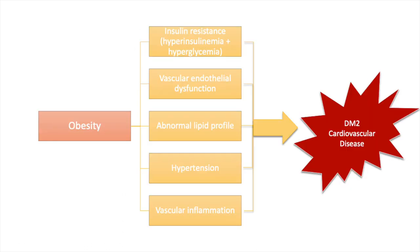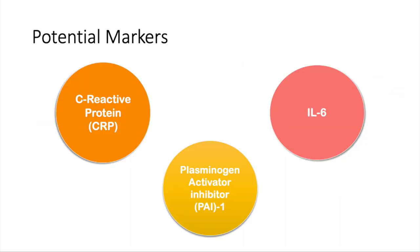To summarize, a simplified way of seeing this is that obesity will cause insulin resistance, vascular endothelial dysfunction, abnormal lipid profile, hypertension, and vascular inflammation — all of which lead to cardiovascular disease and type 2 diabetes. There are also inflammatory and prothrombotic markers associated with increased risk for subsequent cardiovascular disease and type 2 diabetes mellitus, including C-reactive protein, IL-6, and plasminogen activator inhibitor 1, though these are still not used universally.